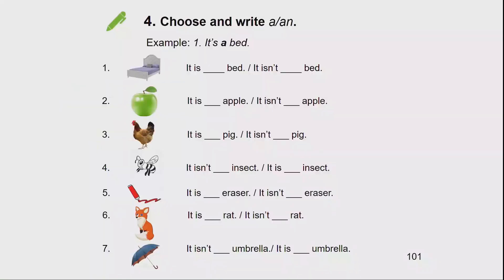Who wants to go first? Great, thanks. And our lesson is over. For your homework, I want you to do exercise number 4 on page 101. You look at the pictures and choose the sentence. Here you write A or AN. For example, number 1: It's a bed. Goodbye. See you next time.